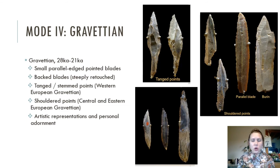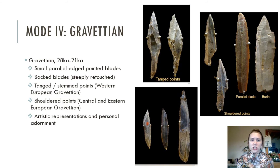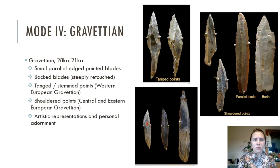Following the Aurignacian, we see the Gravettian, which corresponds to about 28,000 to 21,000 years ago. In the Gravettian, we find parallel-edged pointed blades, backed blades and backed bladelets, as well as tanged and stemmed points and shouldered points. A lot of the tool form variation here is regional, as seen with distinctions found between Western Europe and Central and Eastern Europe. Along with the Aurignacian, here we also find some unique instances of art, specifically the expansive presence of Venus figurines.